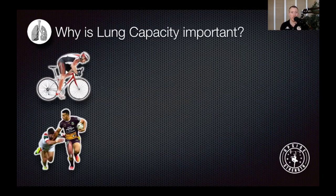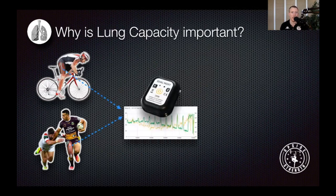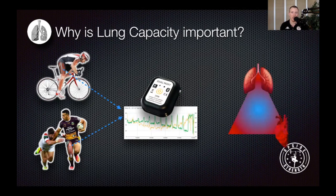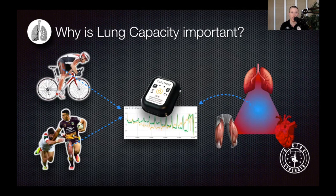Why is lung capacity important? Whether you work with endurance athletes — cycling, swimming, running — or intermittent sports such as rugby or soccer, we now know thanks to technologies such as the MOXIE that all efforts, regardless of their nature, are going to require oxygen to be taken into the organism, transported to the working muscles, utilized, and then CO2 to be extracted. This is done by three big physiological systems: the respiratory system, the cardiovascular system, and the metabolic or muscular system. Those three systems work together to fuel performance, and so the respiratory system plays a central role — hence why being able to measure and train lung capacity is really important for all athletes.